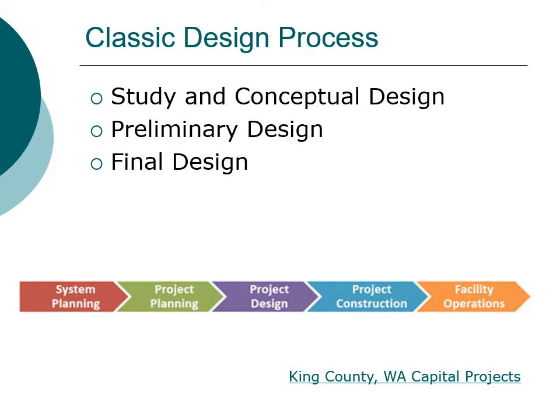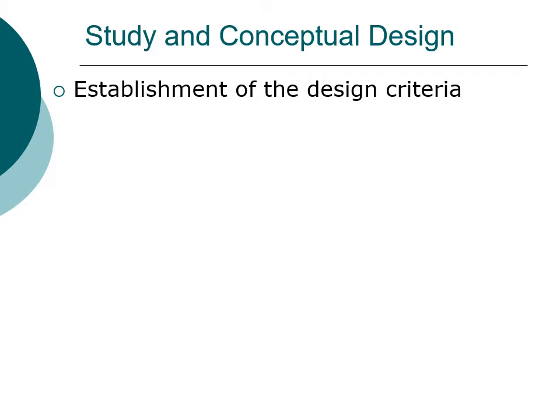There are a number of approaches to the design and construction process. The classical design and construction process involves a study, a conceptual design, then a preliminary design, and the final design. A good example of these can be found on the King County, Washington website for their capital projects. One thing to note is the involvement of the general public throughout the entire process — from system planning to operation, the public is involved.